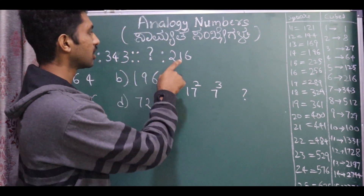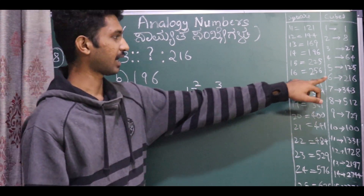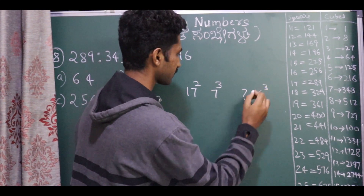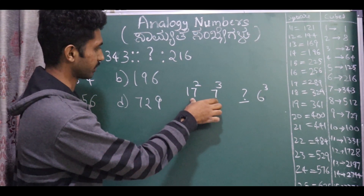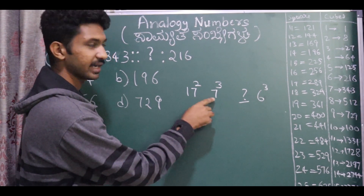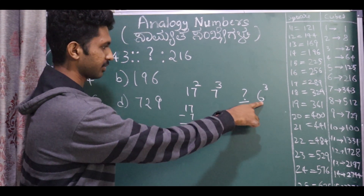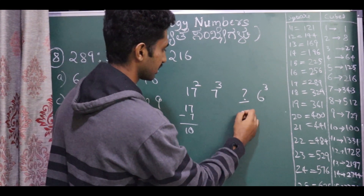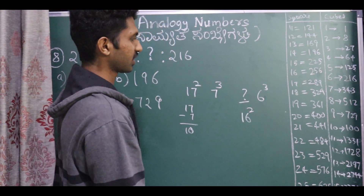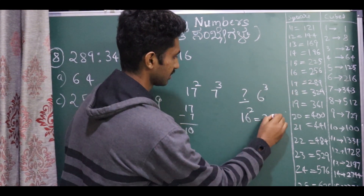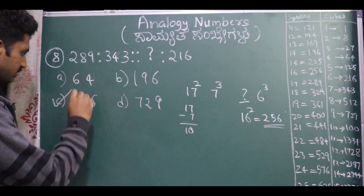Now find the question mark. 216 is the perfect cube of 6. We have established a relation between these two numbers — they have a difference of 10. So the first term of the pair is 16, and it is a square term. 16 squared is 256. So we need to find 256, which is option C and is the correct answer.